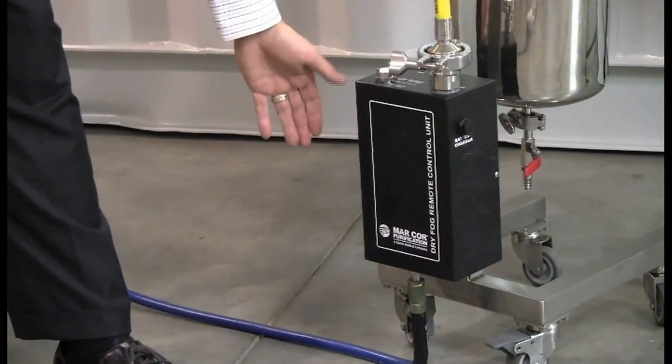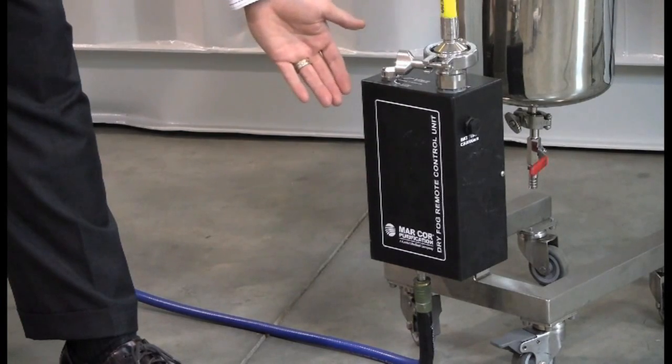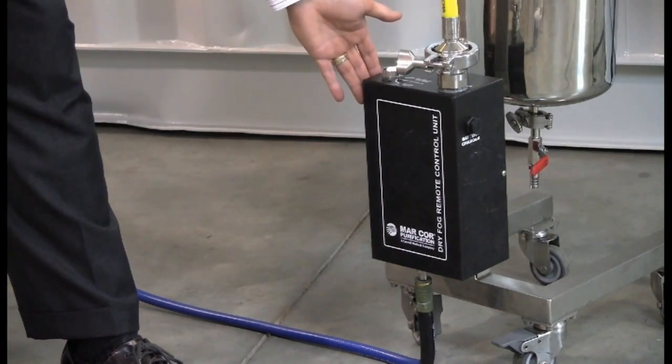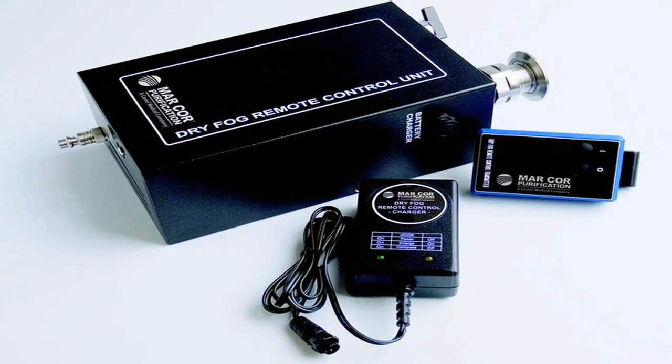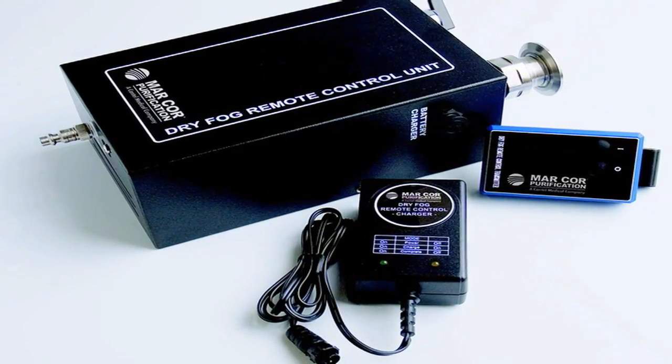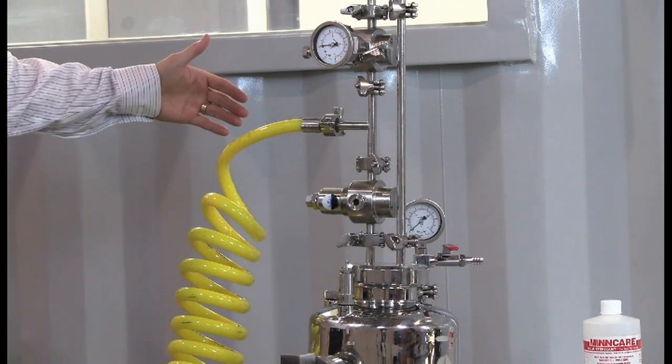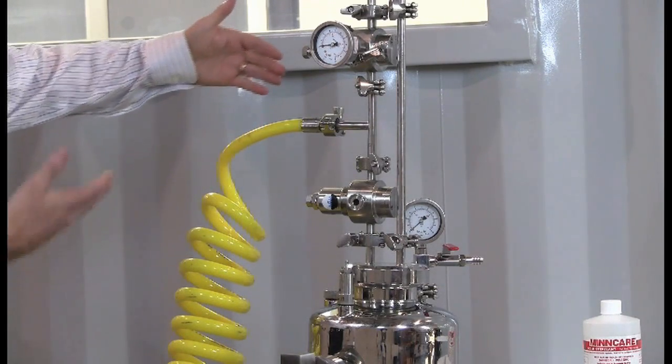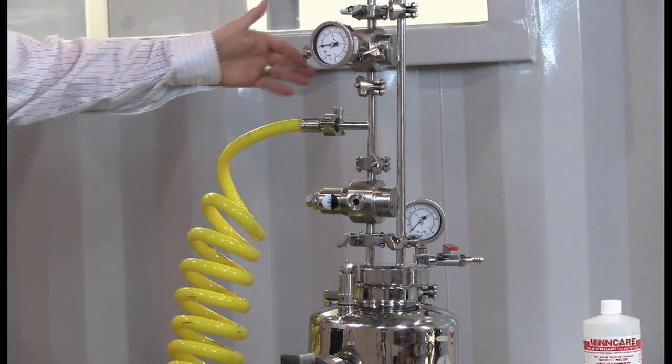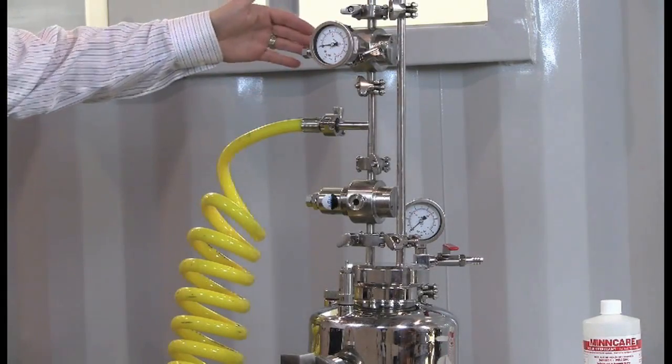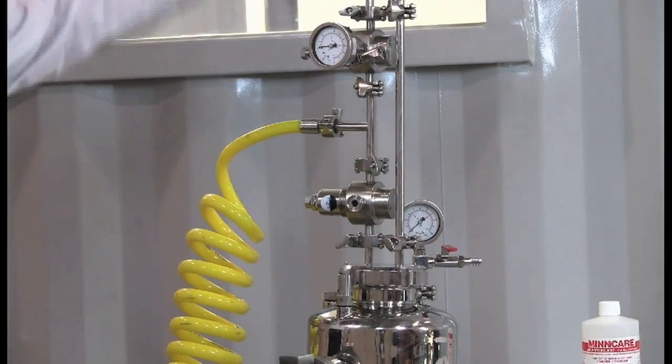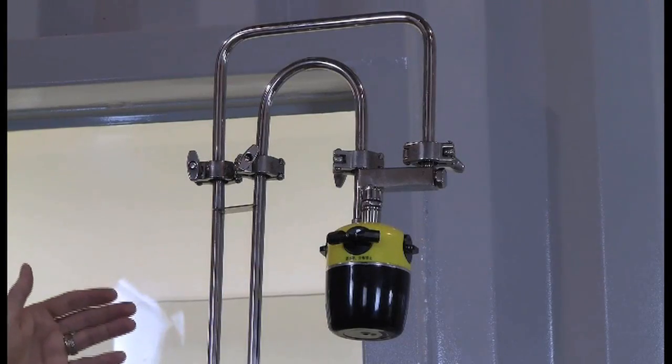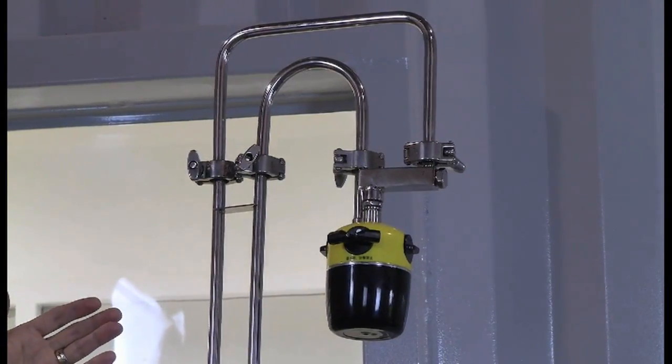To describe all the components of the unit: compressed air comes in the bottom of the dry fog remote. The dry fog remote turns on and off with this remote control when you're outside the clean room, allowing you to operate it and not be in the clean area. Compressed air connection to the dry fog unit. Pressure gauges and regulators regulating the compressed air to the tank as well as to the head. This is the dry fog head, the heart of the dry fog machine.